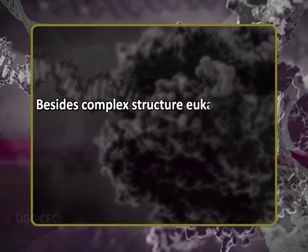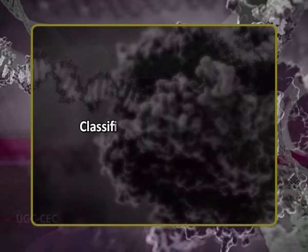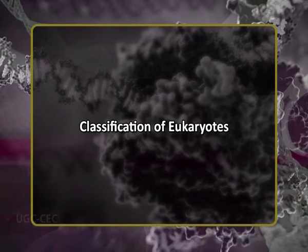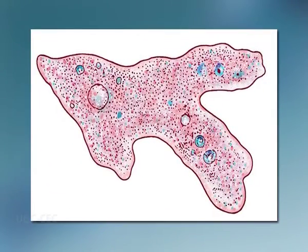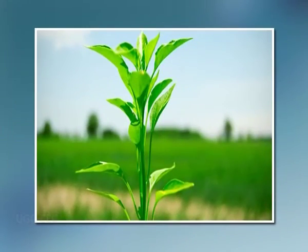Besides complex structure, eukaryotic cells are much larger in size compared to prokaryotic cells. Eukaryotes include kingdom Protista such as amoeba — a single cell that is eukaryotic — kingdom Fungi such as mushrooms, kingdom Plantae such as plants which synthesize their food by photosynthesis, and finally kingdom Animalia such as animals including human beings. Thus there are four eukaryotic kingdoms of life. This concludes the differences between prokaryotes and eukaryotes.